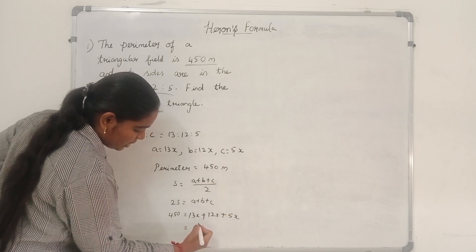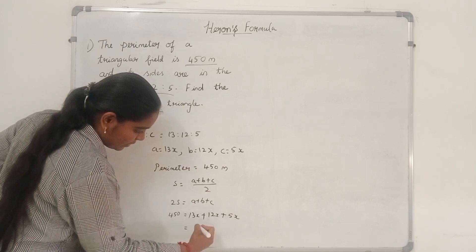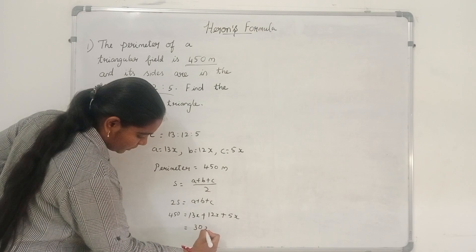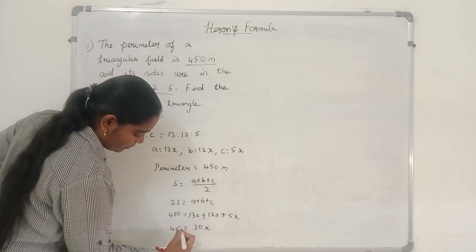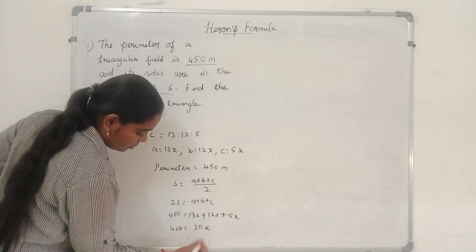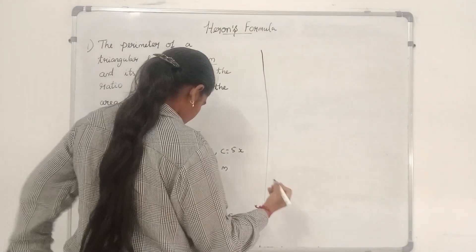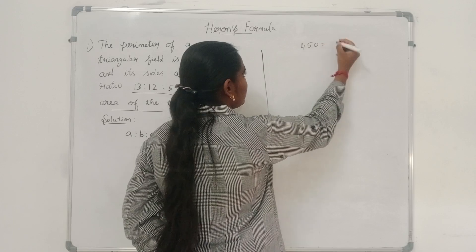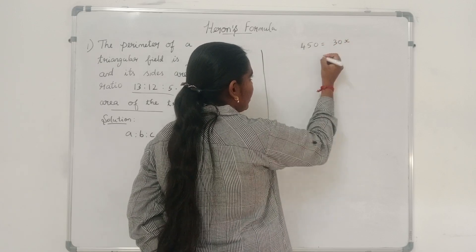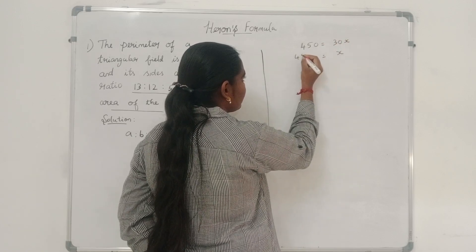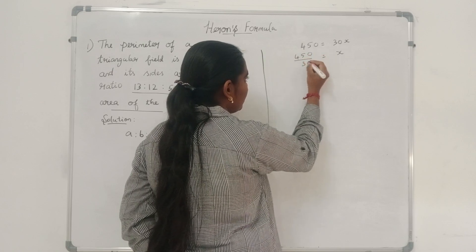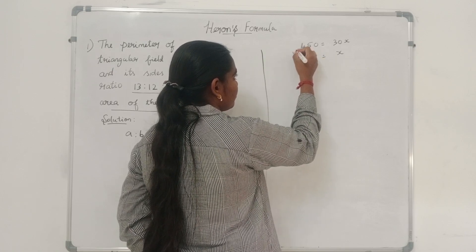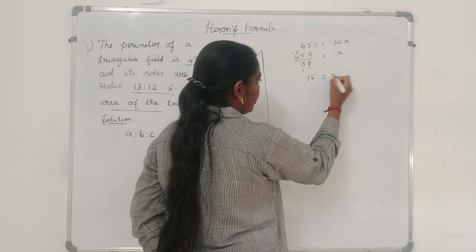So, 13 plus 12 plus 5 equals 30. 30x equal to 450. So x equal to 450 divided by 30, which gives x equal to 15.